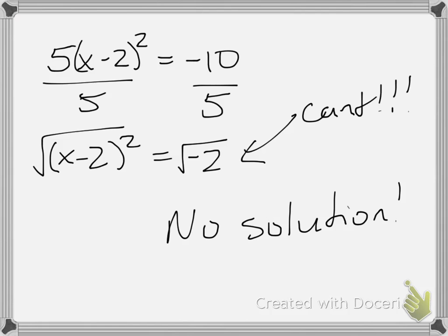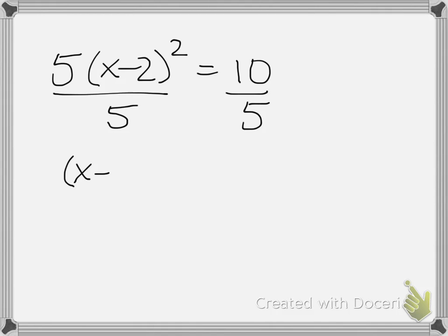So what about one more? What if we wanted to solve 5 times x minus 2 squared is equal to positive 10? Well, now we can divide by 5 because we need to get rid of that 5 first. We get x minus 2 squared is equal to 2. Now we take the square root of both sides, and what happens is we get x minus 2 is equal to... the square root of 2 is not a nice number. It's a decimal, and that's okay too. It's 1.41, as long as we remember that it's not just 1.41. It could be plus or minus 1.41.